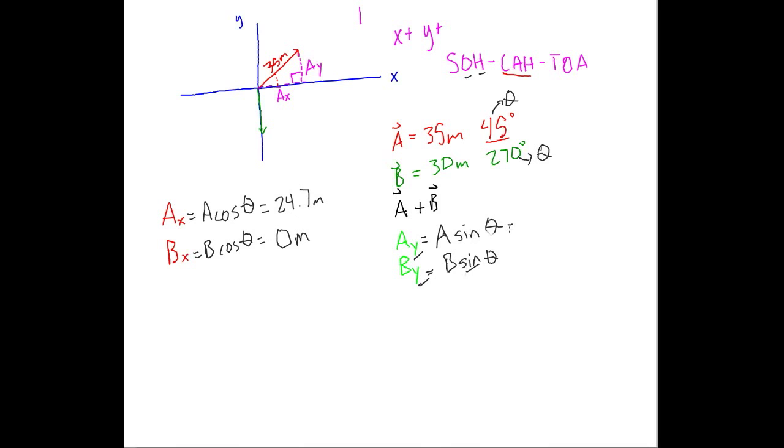Now to do Ay, we go 35 sine of 45. That gives us 24.7 meters. Over here, I'm going to go 30 sine of 270. That gives me negative 30. Now this should make sense because the y component tells you how far to go down. Well, with vector B, we had no x component. All we did is we went straight down. We went down how far? 30 meters. That is why it is negative because it is signifying going down. Think about it. Negative people have a frown. Negative means down when it comes to y.